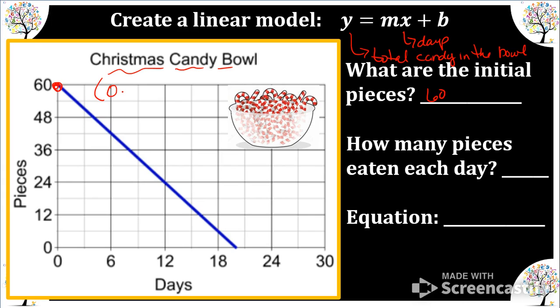So we're going to take two ordered pairs to find that rate of change. I'm just going to pick this one right here. So twelve comma twenty-four, our slope, y2 minus y1 over x2 minus x1. So we have negative thirty-six over twelve, and that gives us negative three. So there are three pieces eaten each day. When we write the equation, we will use the negative.